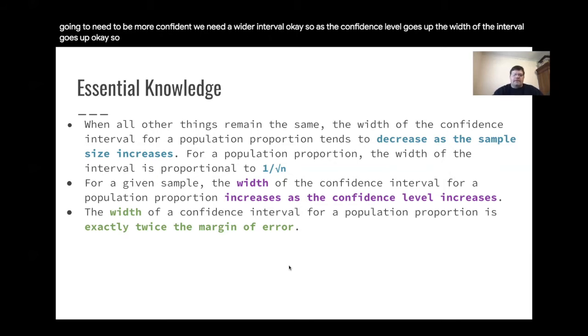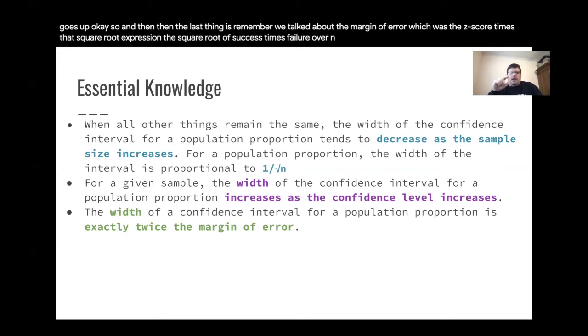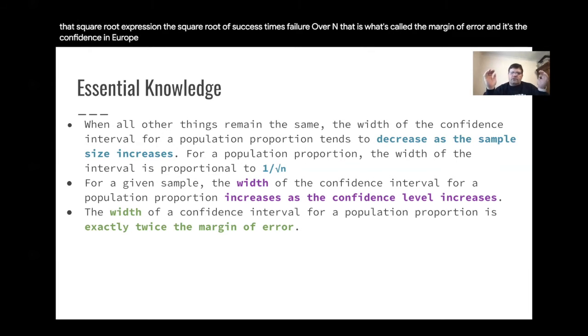And then the last thing is the margin of error, which was the Z score times that square root expression, the square root of success times failure over n. And that is what's called the margin of error. The confidence interval is two times as long if you take the p hat plus the margin of error and p hat minus the margin of error.